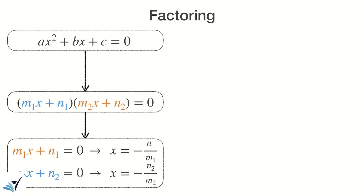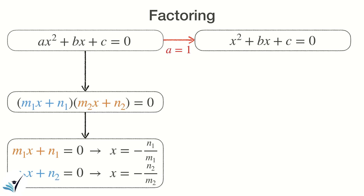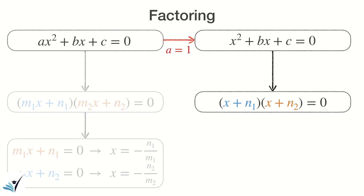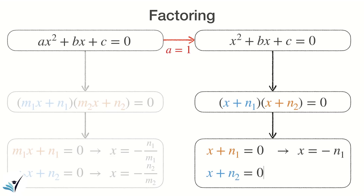In the simpler case where a is equal to one, if you convert the quadratic equation to a multiplication of two factors, there are only two unknowns n1 and n2 to find. Once you find n1 and n2, you set each factor equal to zero and solve for x, which is easy because you are again dealing with linear equations.